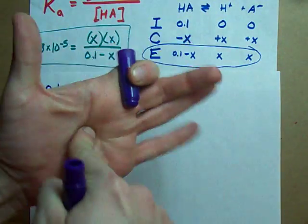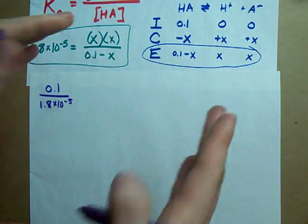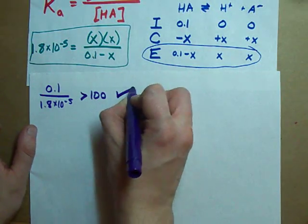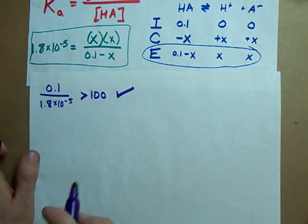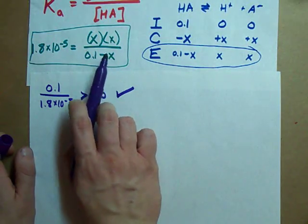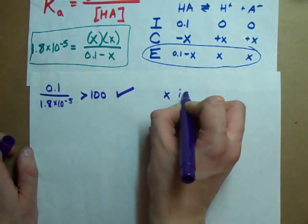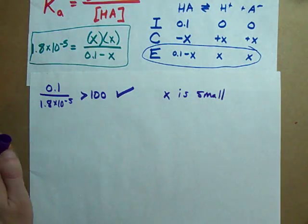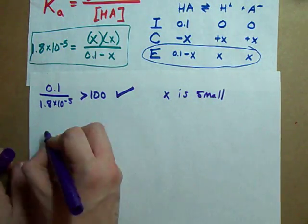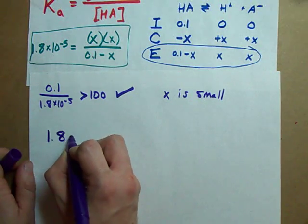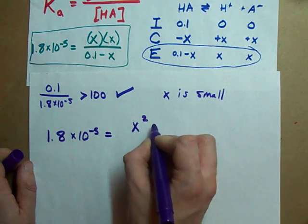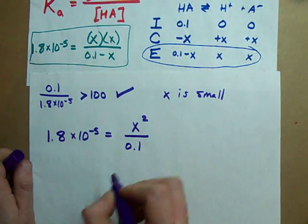I did that on my calculator, and I got 5,000 something. That is bigger than 100, so I can assume that X is very, very, very small relative to my 0.1. What does that mean, assumption-wise?